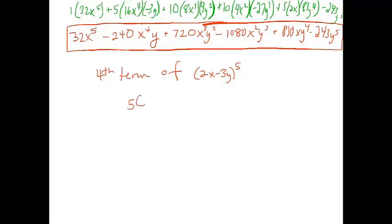That would be 5 choose 3 times 2x to the, what would that be? Second times negative 3y cubed.